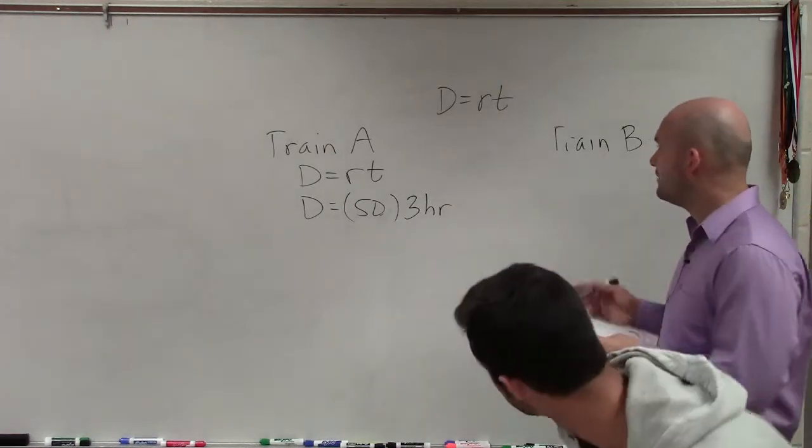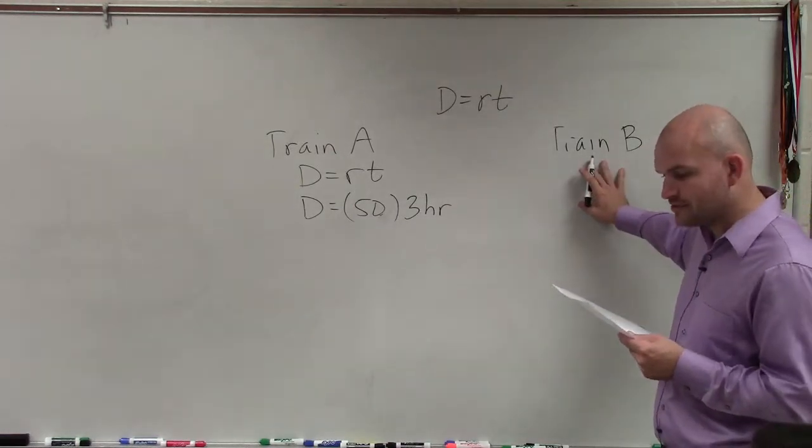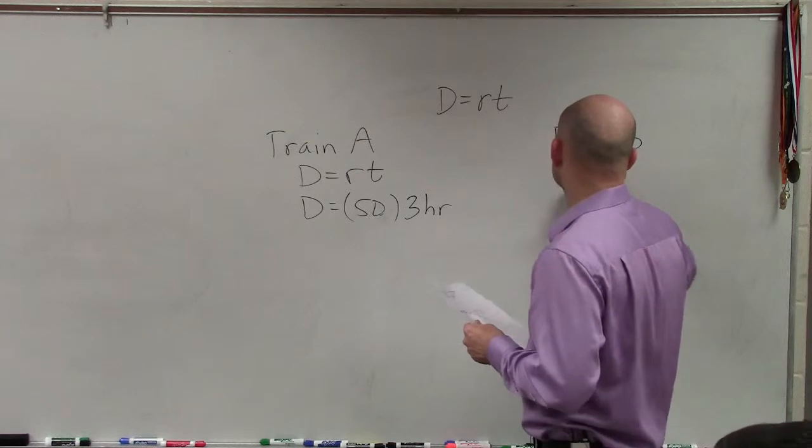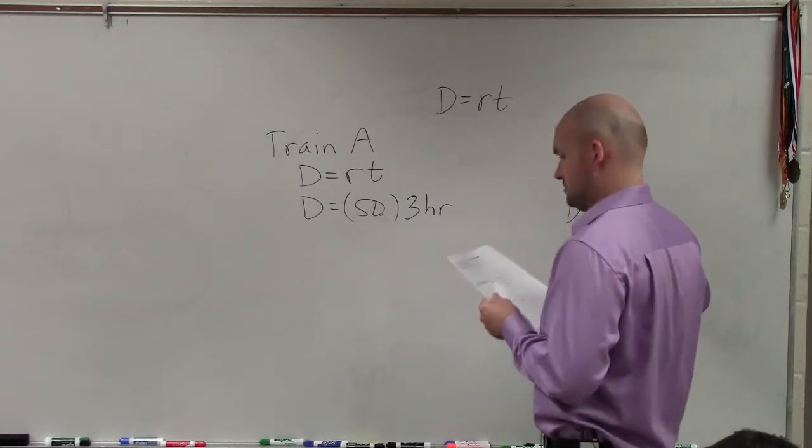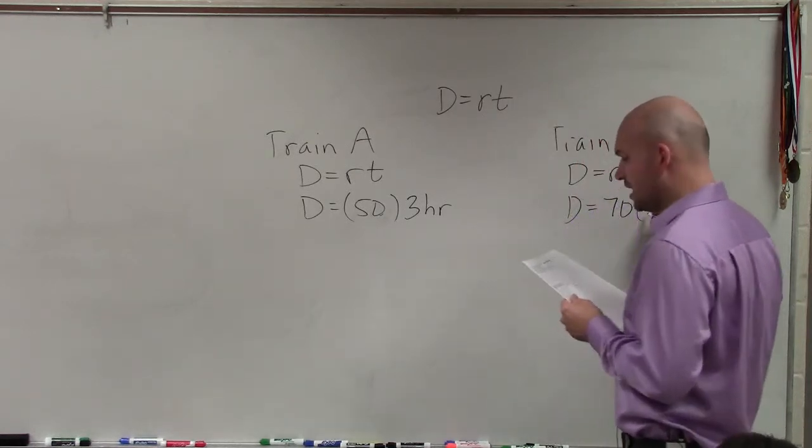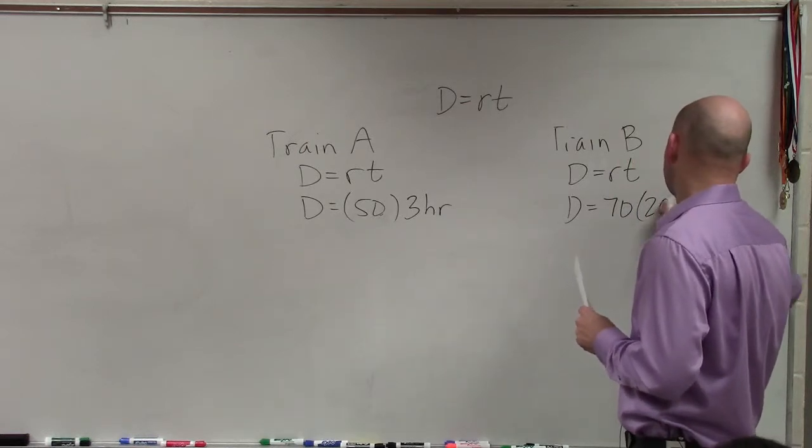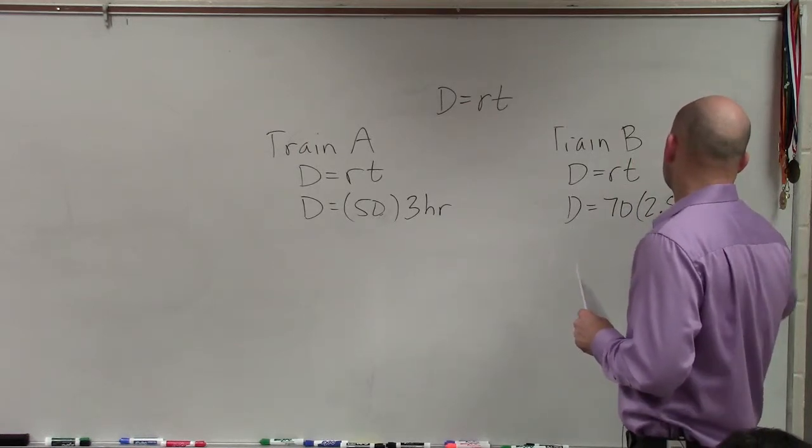Then we have train B. Train B traveled 70 miles per hour times 2 and 1 half, which I'll just use a decimal for this.